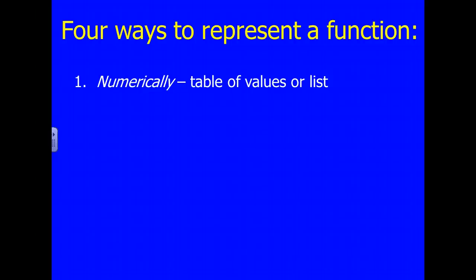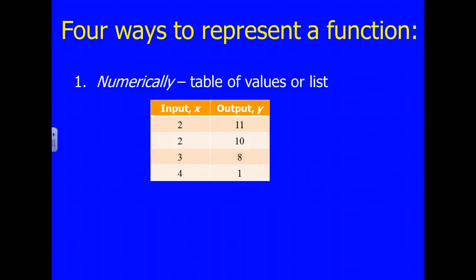And then four ways to represent a function numerically. You might have to take and pause this to copy some of this down. But numerically, we would do a table of values. And mathematically, we want to look at all the different ways that we can do this. So we have an input, which is our x, and our output, which is our y. So which one's the domain? Well, I hope you said the x's. So 2, 3, 4 would be the domain. And then the range would be 11, 10, 8, and 1. Those specific discrete values.